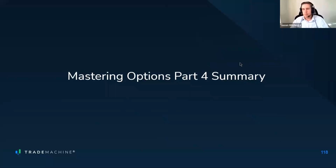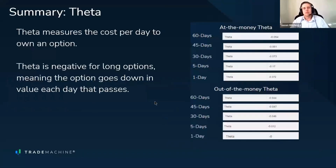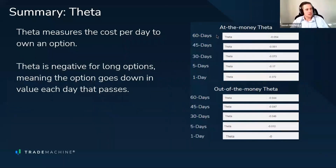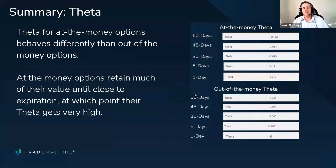Let's do a quick review. Theta measures the cost per day to own an option. Theta is negative for long options, meaning the option goes down in value for each day that passes if the stock and volatility don't move. The theta for at-the-money options is different from out-of-the-money options: for at-the-money options, they're most expensive to own right before expiration. For out-of-the-money options, there's often a sweet spot where most of the value gets lost at some point, and then owning them anymore doesn't cost much because there's not much value left.